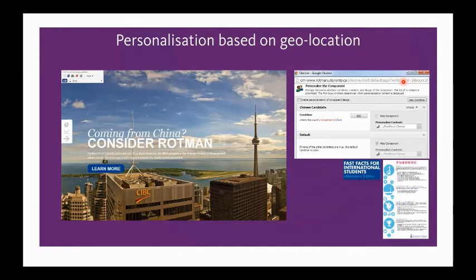You can see the Sitecore rules-based engine on the right — it's very simple. Because the website is component-based rather than page-based, each picture or piece of data is a component. You can click on that component and start to personalize it using the personalization button. It opens up the rules-based engine — I'm not going to get technical because it's really not technical. You create a new condition, and there are hundreds of conditions within the system out of the box, so you don't need to do any programming or development. You're not going into any HTML whatsoever.